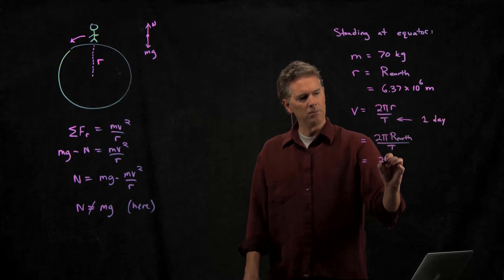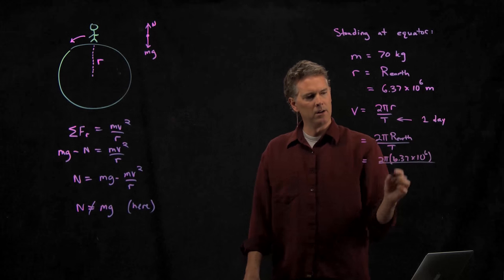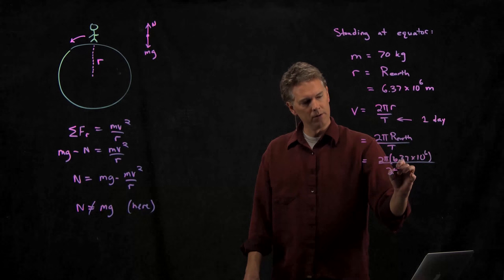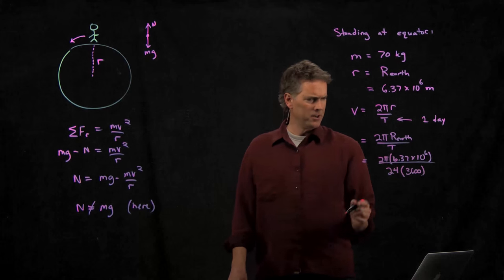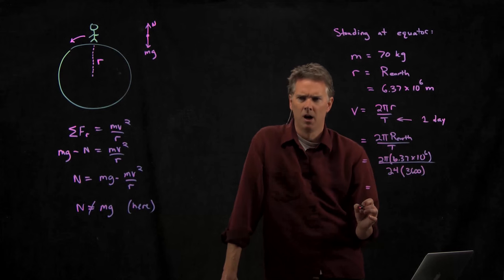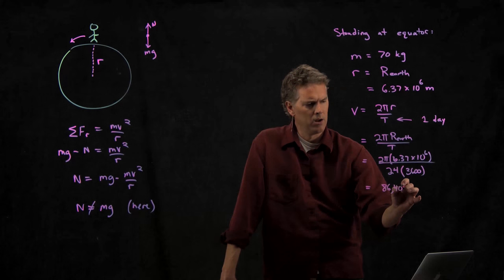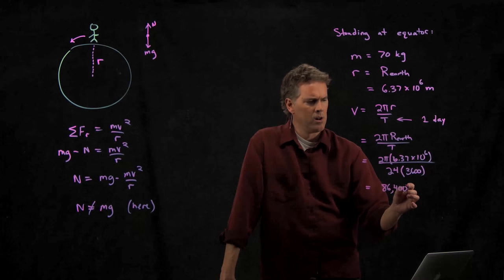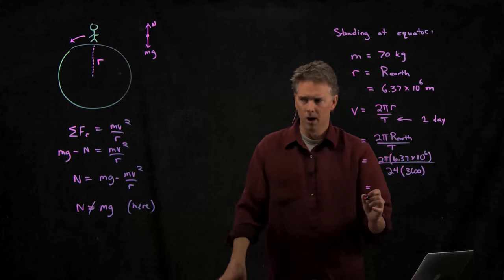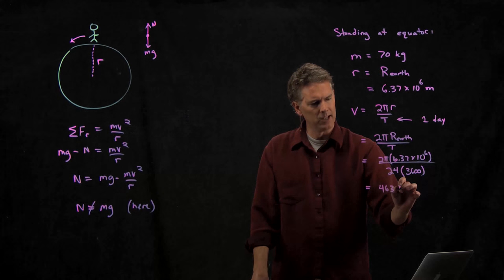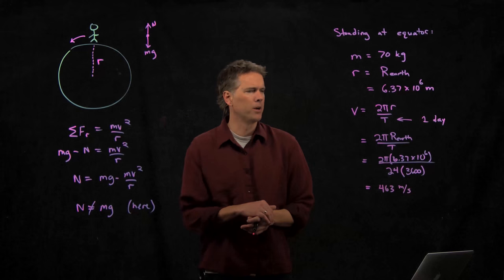It becomes 2 pi times the radius of the earth divided by T where T is 24 hours. And so we can punch in some numbers here. 2 pi, radius of the earth we just said was 6.37 times 10 to the 6 meters. One day is what? It's 24 hours times 3600 seconds per hour. Somebody punch this into your calculator and tell me what you get. 86,400. That's for T, right? What'd you say? 463? 463 and its SI unit so we're in meters per second. Does that sound right? Yeah, that sounds right because we said that we're moving about a thousand miles per hour. Double that, you get about a thousand miles per hour.